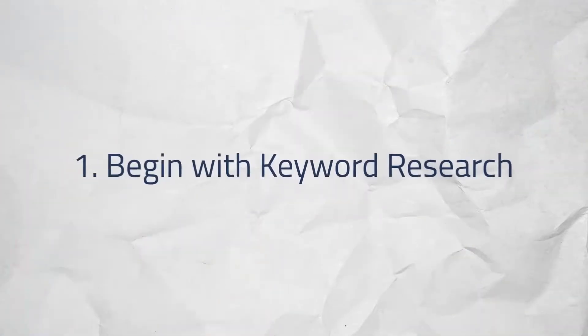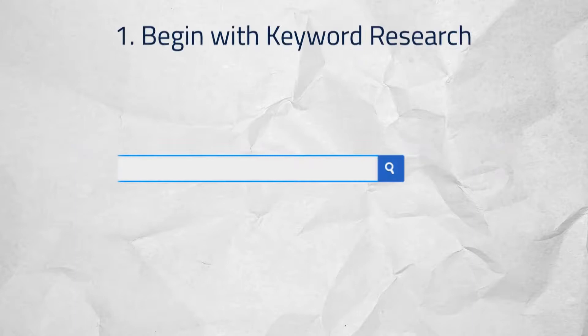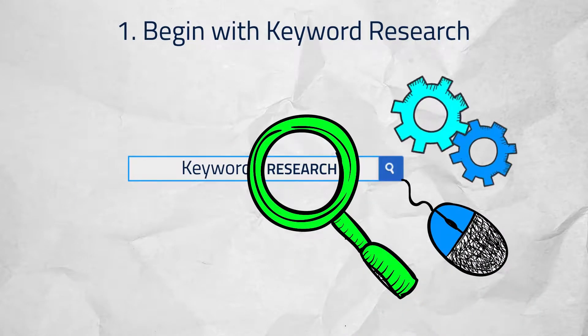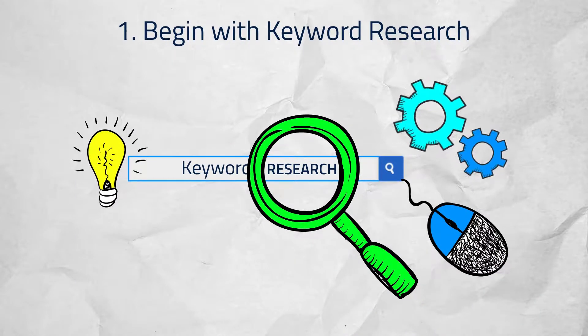Here are seven key elements for pay-per-click advertising success. One: Begin with keyword research. Keyword research forms the foundation for your campaign and will get you going in the right direction from the start.